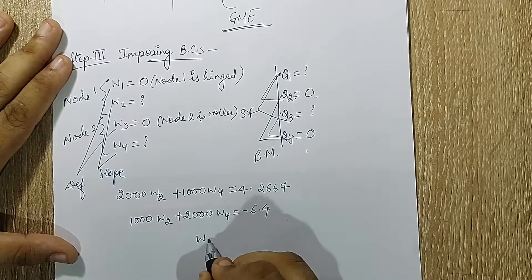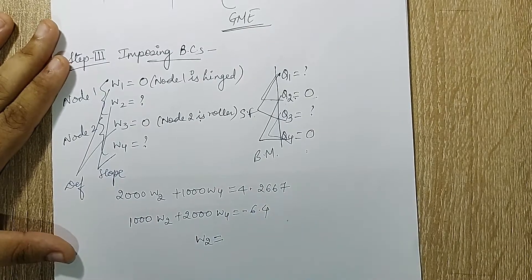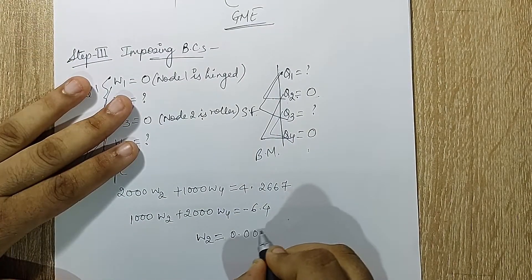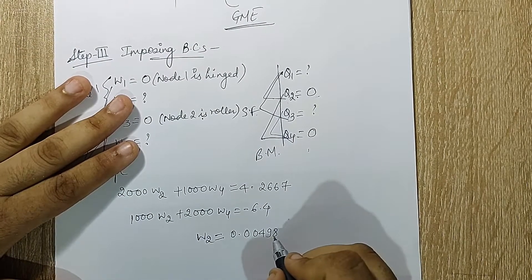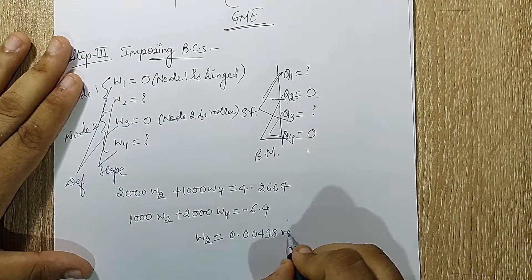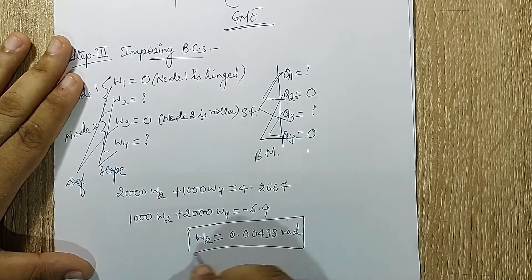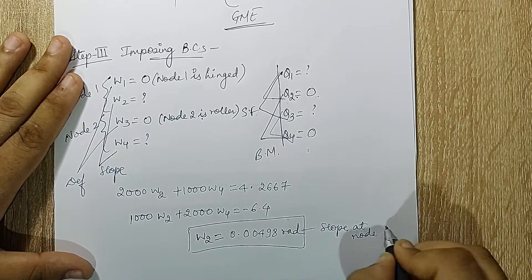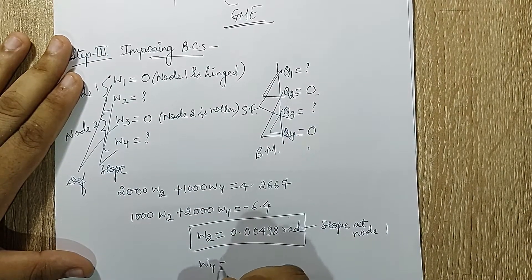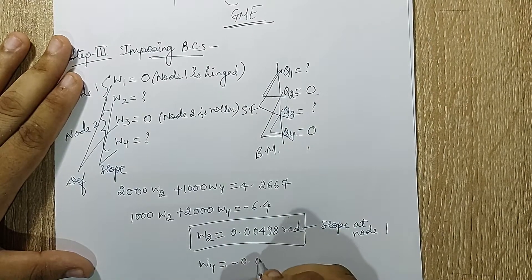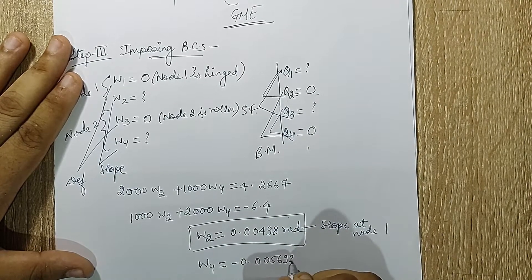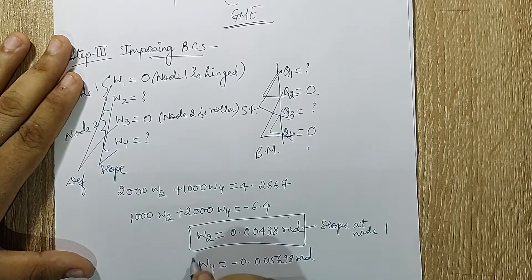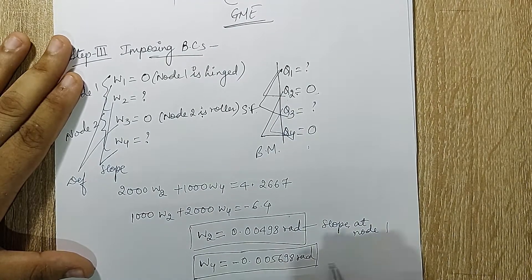When I solve these two, I get the value of w2 as 0.00498 radian. This is the slope at node 1. When I calculate w4, I get minus 0.005698 radian. This is also slope at node 2.